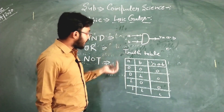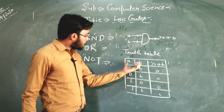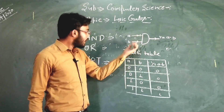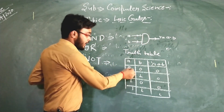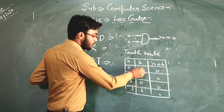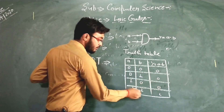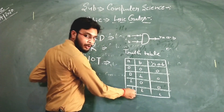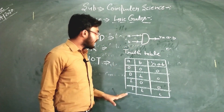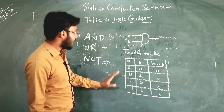According to the definition of AND gate, there are two inputs and a single output. The output is the multiplication of the given inputs. If any of the inputs is false or off, the output will be off. But when both the inputs are on, then the output will be on. This is the AND gate.